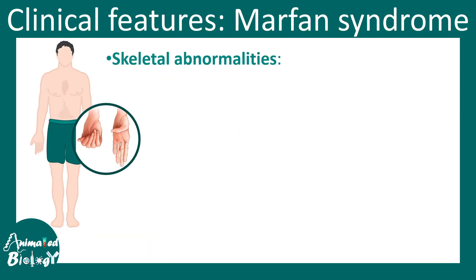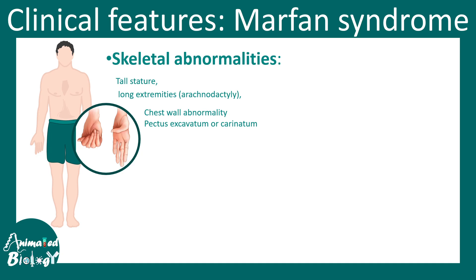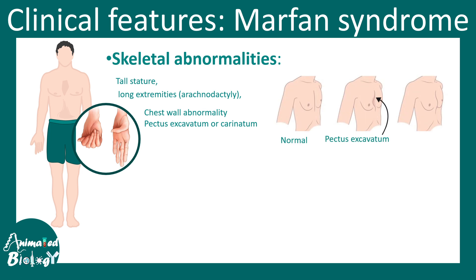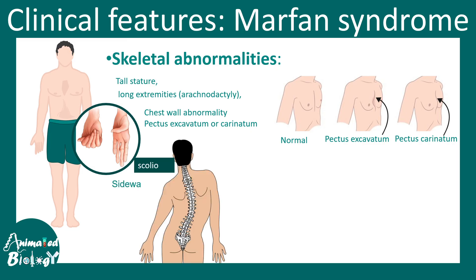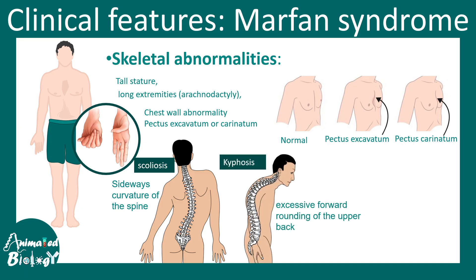Looking at the clinical presentation, there are distinct skeletal abnormalities. The legs and hands are extremely thin and slender — patients have tall stature with long extremities known as arachnodactyly, meaning hands or legs resembling the leg of a spider. The chest wall is abnormally protruded or indented: it is known as pectus excavatum if indented, and pectus carinatum if bulging outward.